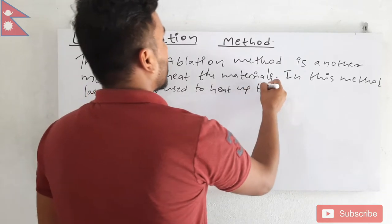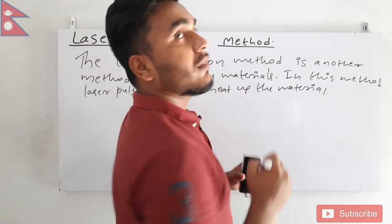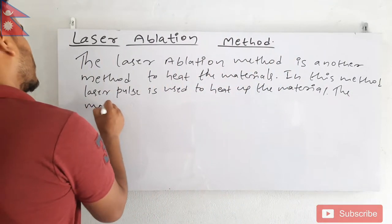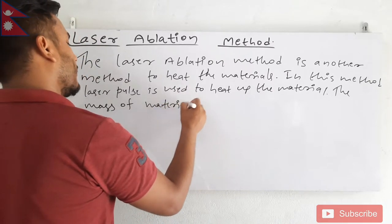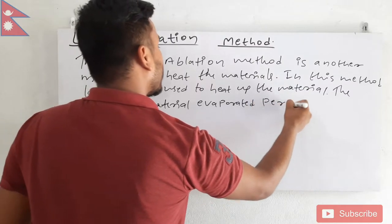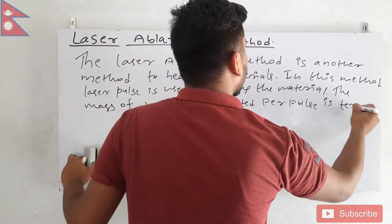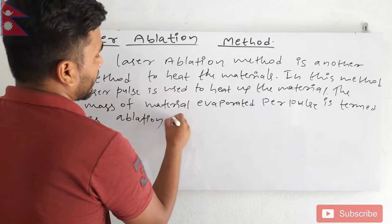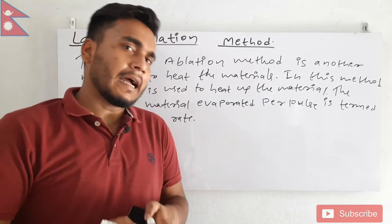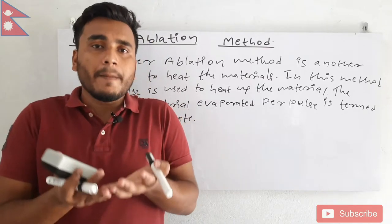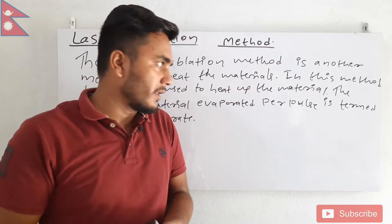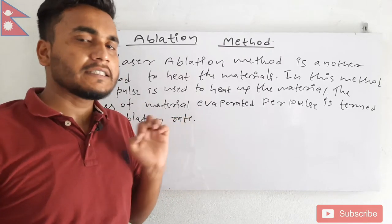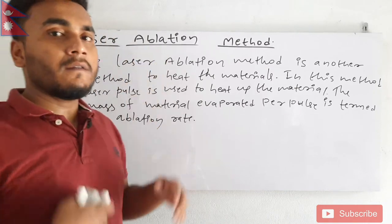In this method, laser pulses are used to heat the material. The mass of material evaporated per unit time is termed as the ablation rate. So from here it is very clear that laser ablation is a technique used to heat the material above its melting point so that we can get the vapor of that material.